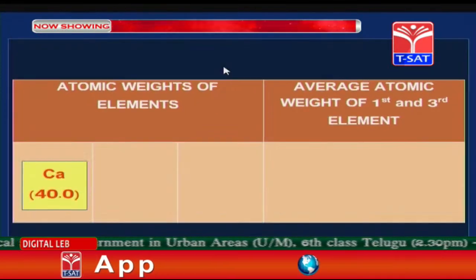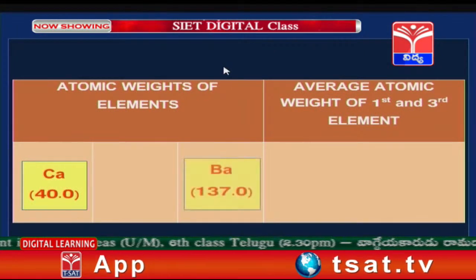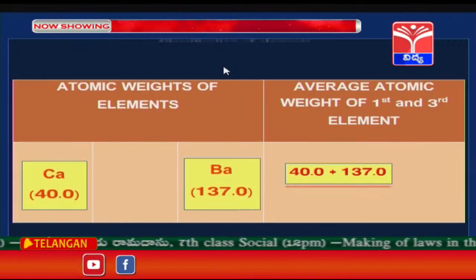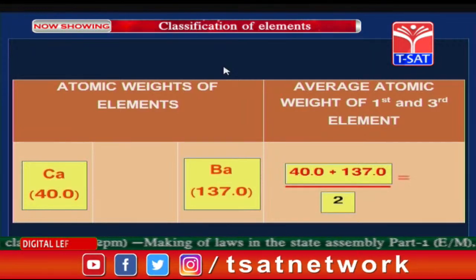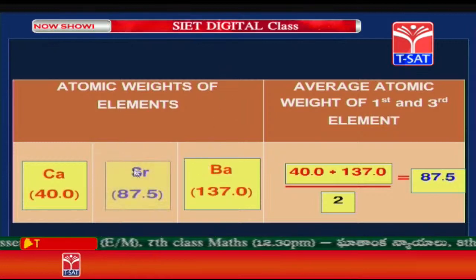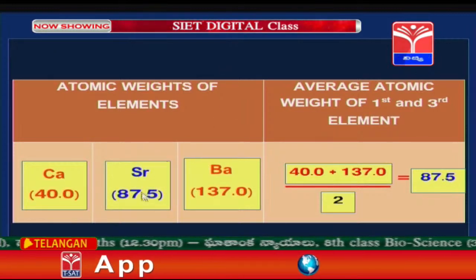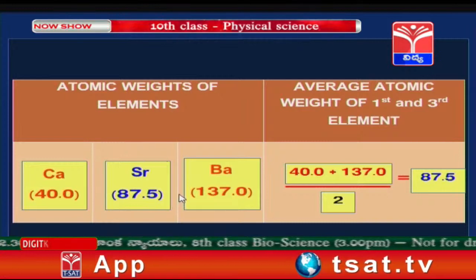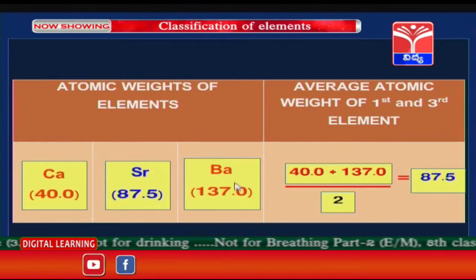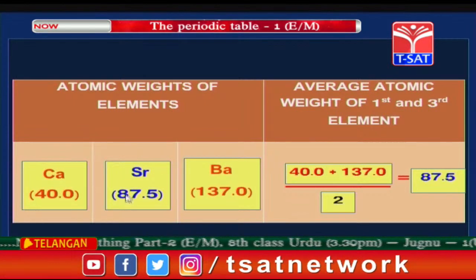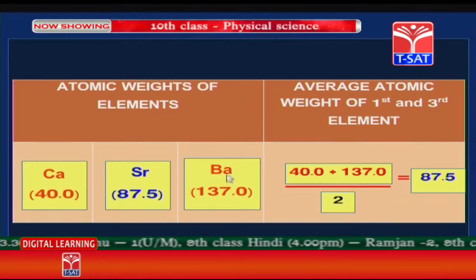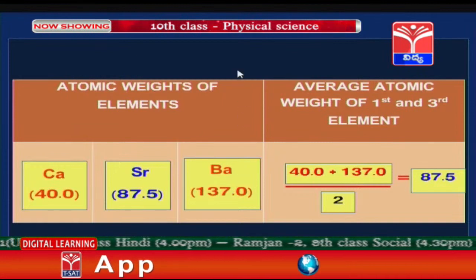In the second triad: calcium has atomic weight 40, barium has atomic weight 137. The sum of their atomic weights divided by 2 gives an average of 87.5. The atomic weight of the middle element strontium is 87.5, which matches the average — again confirming Dobereiner's Law of Triads.